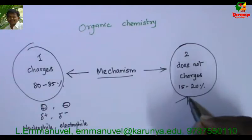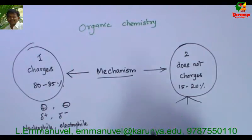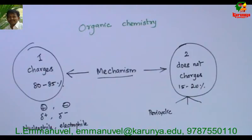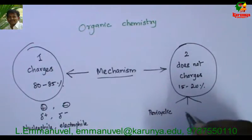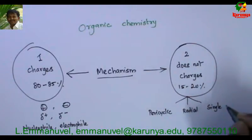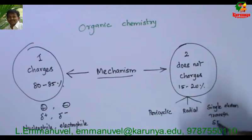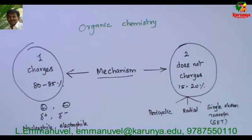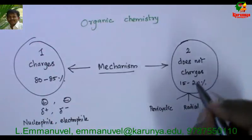In the second category, there are three types. First one: pericyclic — reactions which go through a cyclic transition state and a concerted mechanism, like Diels-Alder, [3,3]-sigmatropic rearrangement, and similar reactions. Second one: radical reactions — radical formation and its addition to a double bond or with some other reagent. Third one: single electron transfer mechanism, called the SET mechanism.